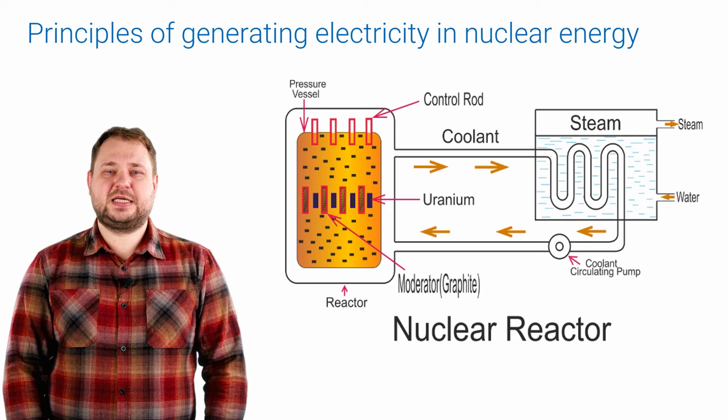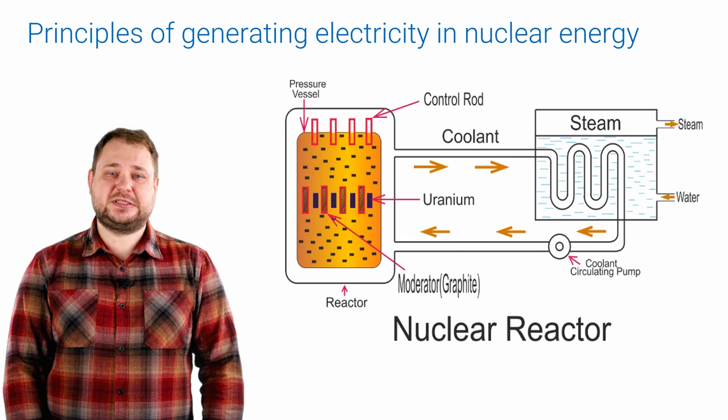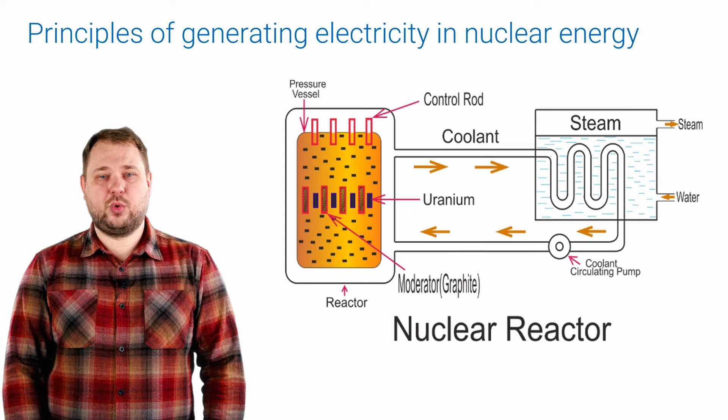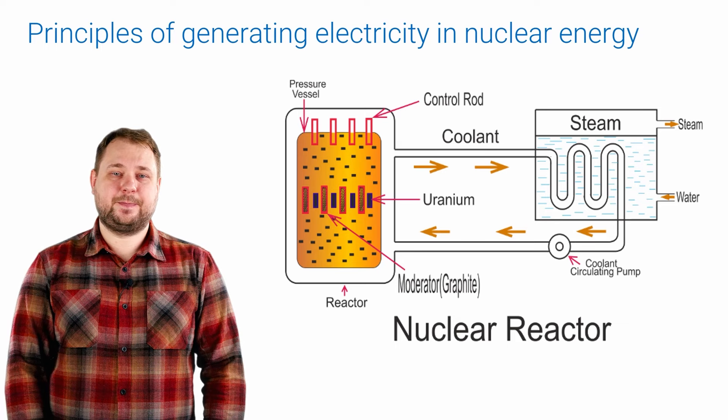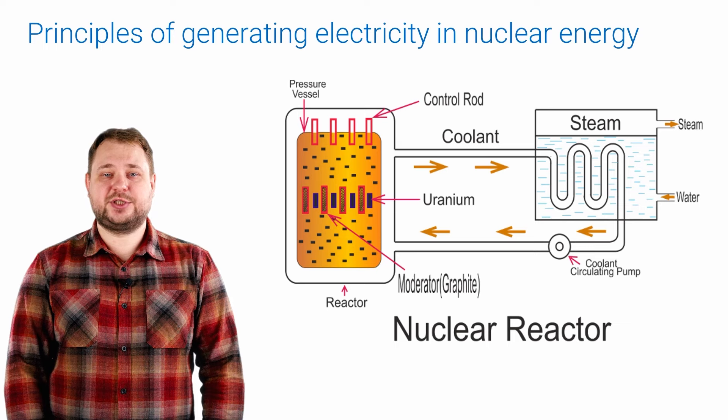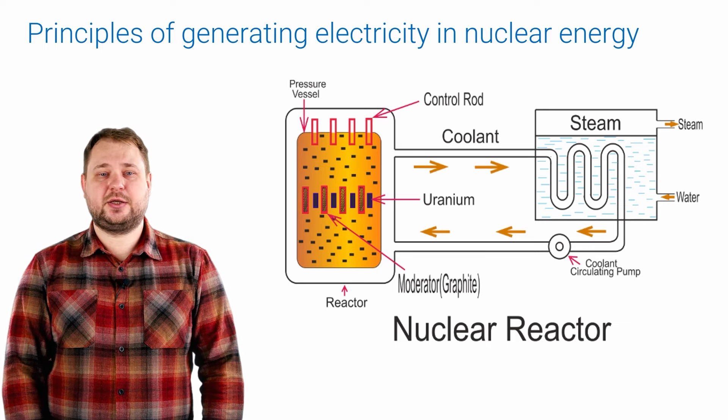The coolant takes heat from the core and transfers it to water in a special tank, the steam generator. The water heats up, boils and turns into steam. Water steam rotates a turbine and the electric generator. This is how electricity is generated at nuclear power plants.